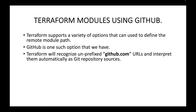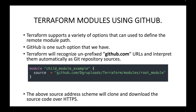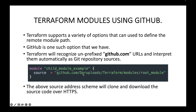Terraform will recognize unprefixed github.com URLs and interpret them automatically as git repository sources. We can store our module code in a GitHub repository and tell Terraform to download the code from there and use it to create the infrastructure. Here is an example of how we can define the source and point it to a GitHub URL: github.com followed by the repo where the root module code is available. This source address will clone and download the source code over HTTPS.